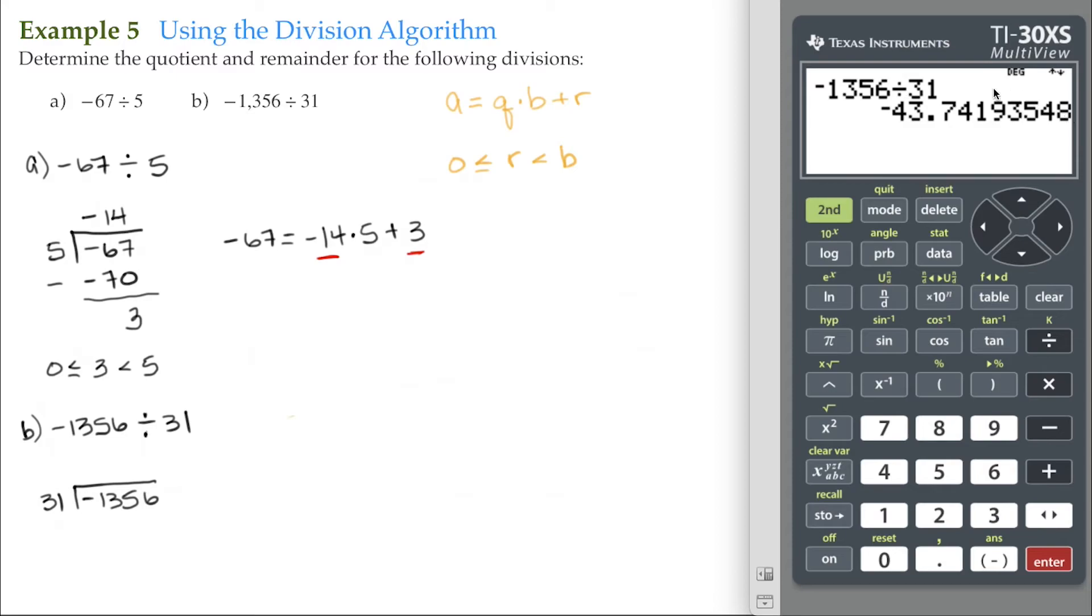Again, we're going to round down to the next integer. So our quotient is negative 44.